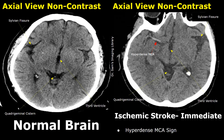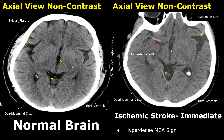On the left side is a normal brain in axial view. The outer layer of the cerebral cortex consists of gray matter and it is slightly hyperdense, slightly brighter than the deeper structures. This deeper layer of cerebral cortex consists of white matter and it appears slightly hypodense or slightly darker than the outer layer.